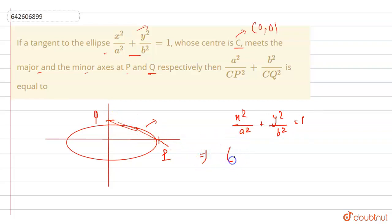So how do we get it? So, assume one point on this ellipse. So the general point on this ellipse can be given by A cos theta, B sin theta. You can check it. By putting A cos theta, we got A square by A square.